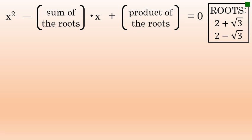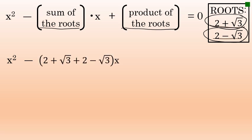Since our two roots are 2 plus the square root of 3 and 2 minus the square root of 3, and our quadratic equation has the form x squared minus the sum of the roots times x plus the product of the roots, the equation will begin x squared, then subtract the sum of the roots — that is, 2 plus the square root of 3 added to 2 minus the square root of 3 — multiplied by x, followed by a plus sign and then the product of the roots.